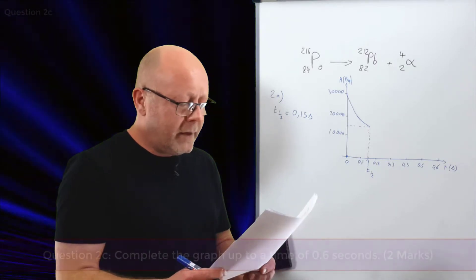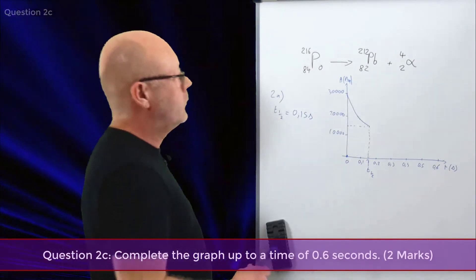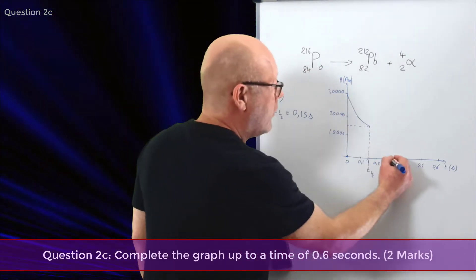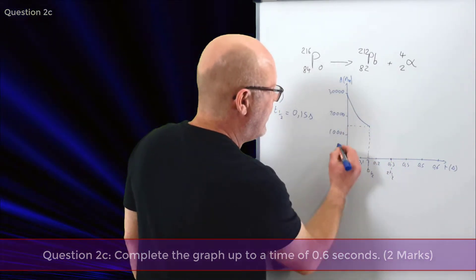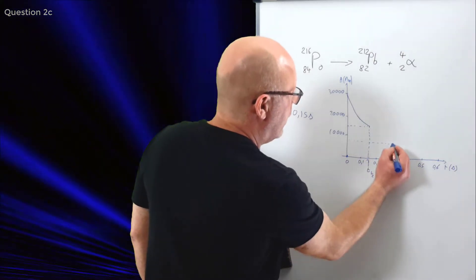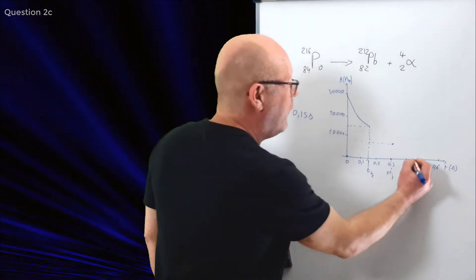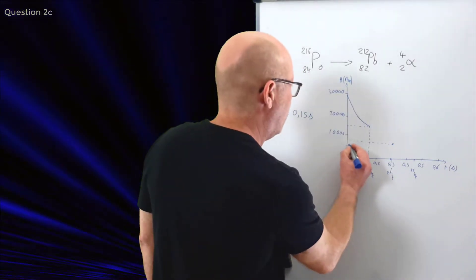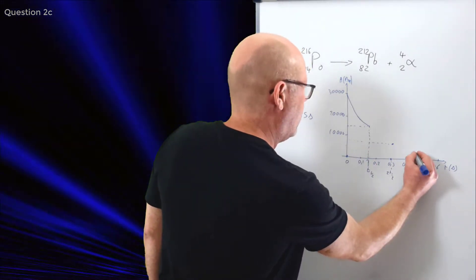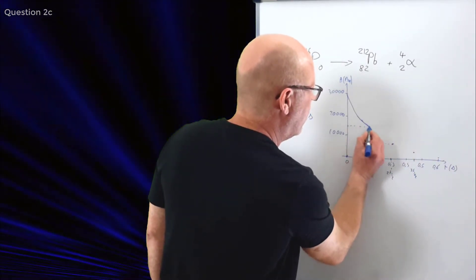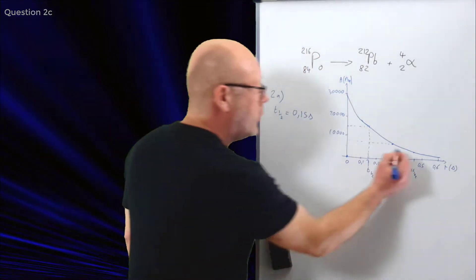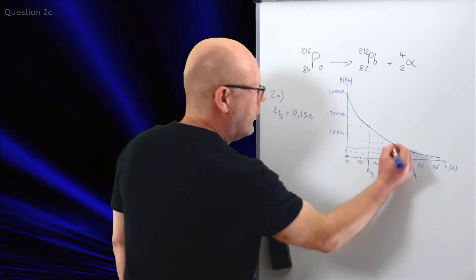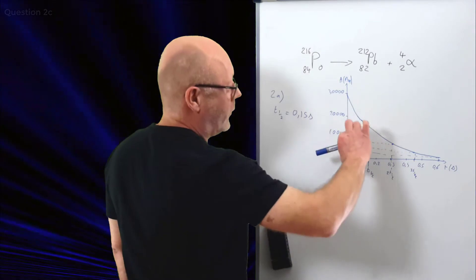Question 2C: complete the graph up to a time of 0.6 seconds. After one half-life, the number of polonium nuclei divides by 2. After a second half-life, it divides by 2 again. So 15,000 divided by 2 gives about 7,500 — a point around there. Then it divides by 2 again for the next half-life, giving about 3,750. It's important to show what you're doing — use little dashed lines to show that you're always dividing the number of nuclei by 2 at each half-life.